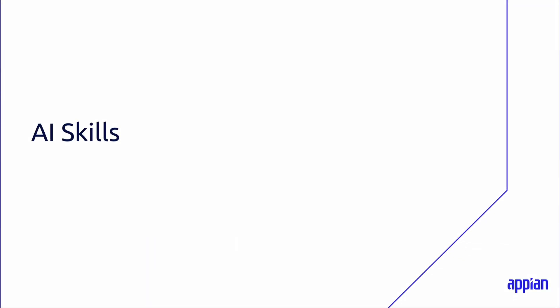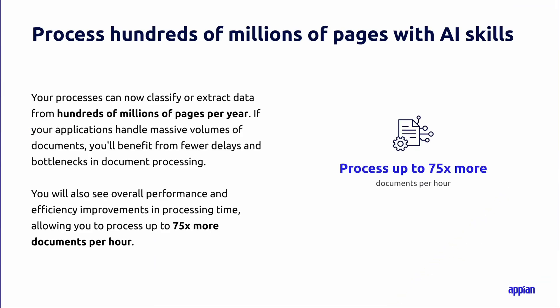Moving on to AI Skills. In this release, we've enhanced our AI architecture to support greater scalability and performance throughout your applications. Your processes can now classify or extract data from hundreds of millions of pages per year thanks to improved smart service throughput. If your applications handle massive volumes of documents, you'll benefit from fewer delays and bottlenecks in document processing, and you'll see overall performance and efficiency improvements — allowing you to process up to 75 times more documents per hour.